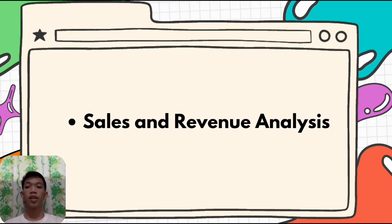Here is an example of marketing control: sales and revenue analysis. Monitor and analyze sales data and revenue metrics to assess the effectiveness of marketing efforts. This includes tracking sales trends, comparing actual sales against sales targets, and identifying any variations or discrepancies. It helps in evaluating the performance of different marketing initiatives and making necessary adjustments.